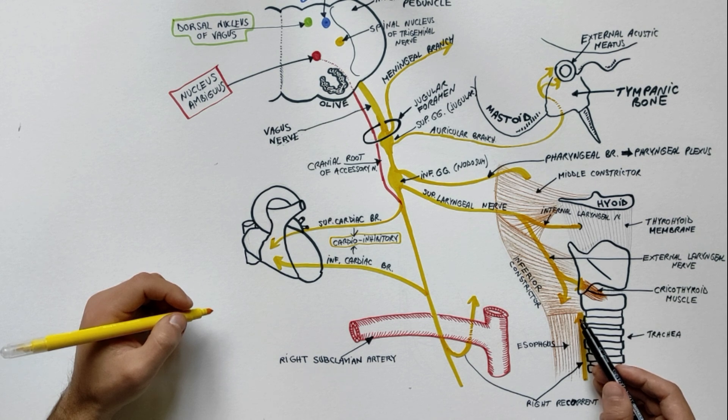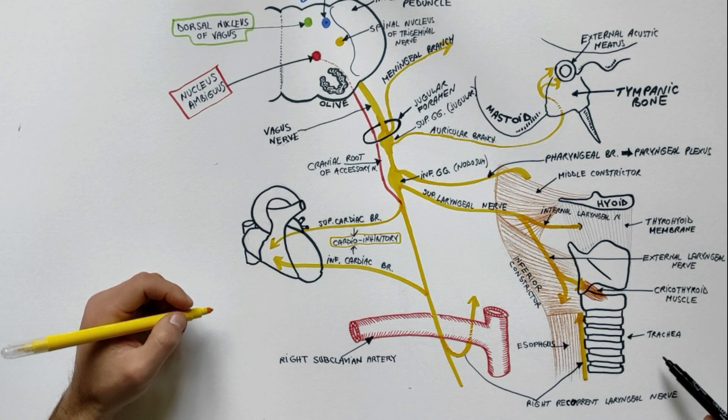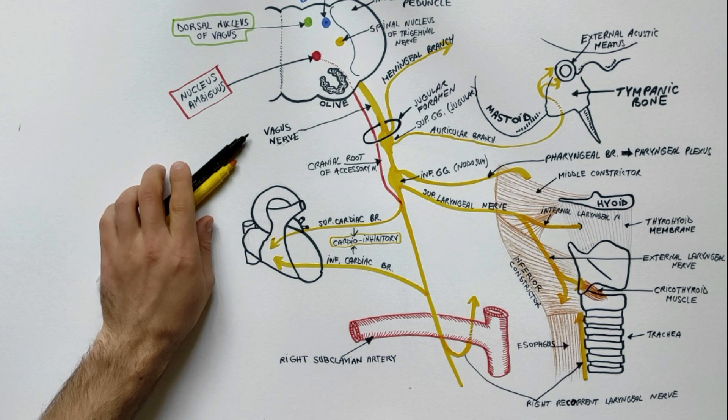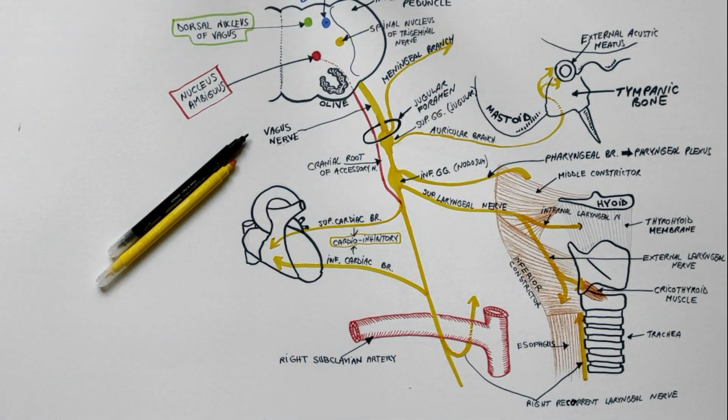The recurrent laryngeal nerve is a mixed nerve and provides motor innervation to all the intrinsic muscles of the larynx except the cricothyroid and sensory innervation to the mucous membrane of laryngeal cavity below the vocal cords.